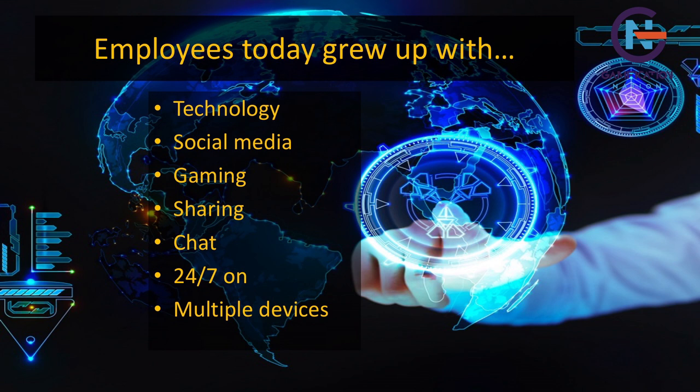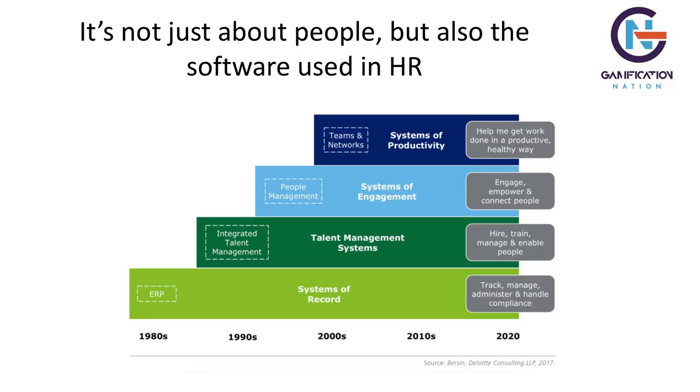But most of our work systems were designed in the 1950s for the manufacturing industry, with ugly interfaces. We come from having wonderful apps on our mobiles and then go into work and get a boxy, ugly-looking form. There is a disconnect. Gamification is not just about people — it's also about the software we use.